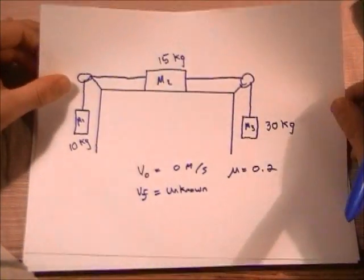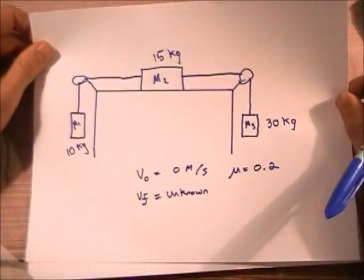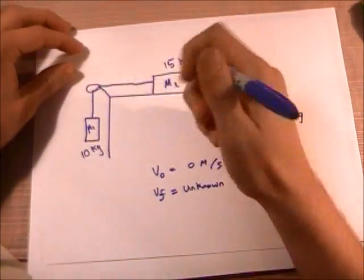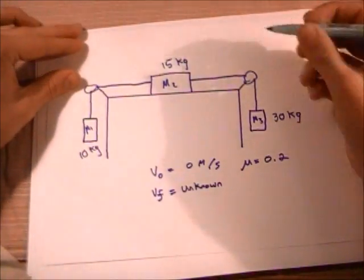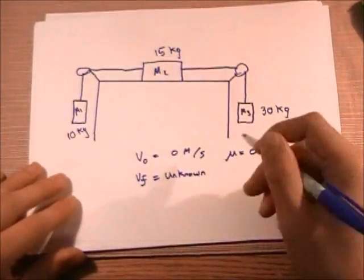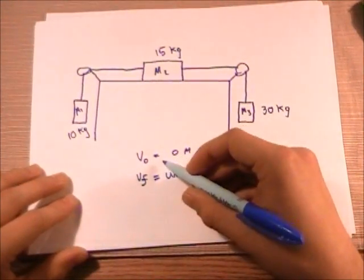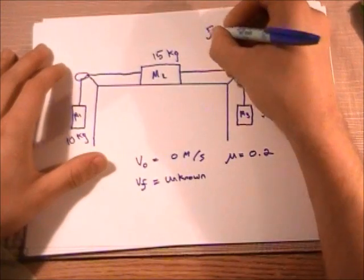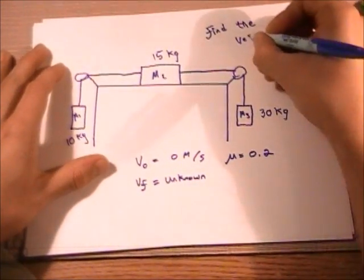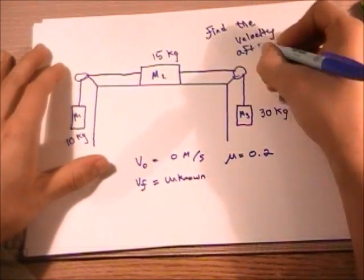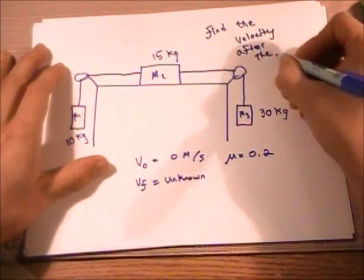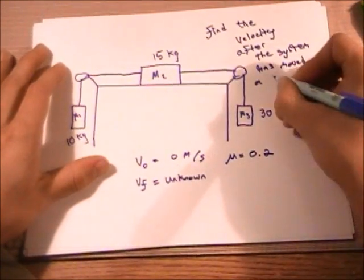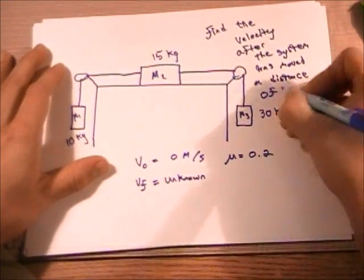So basically what we're looking at for this problem is a modified Atwood's machine problem. We've got a mass one over here which is 10 kilograms, mass two over here which is 15 kilograms, and mass three over here which is 30 kilograms. We're given a coefficient of friction of 0.2, and we're told that our initial velocity of our system is 0 meters per second. We're going to be asked to find the velocity after the system has moved a distance of 1 meter.